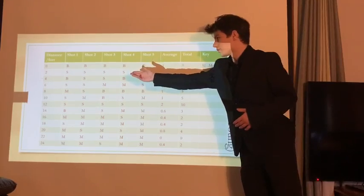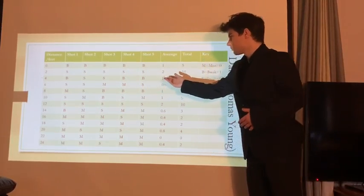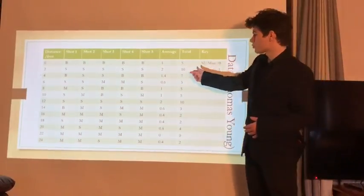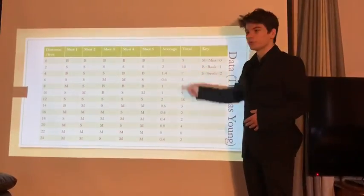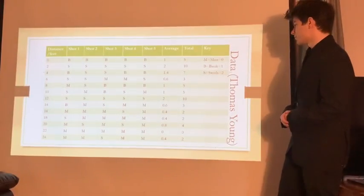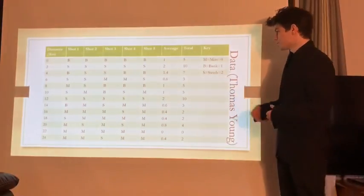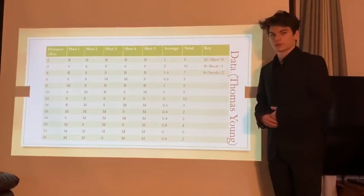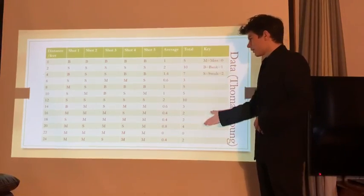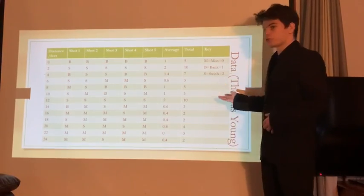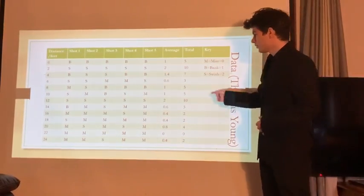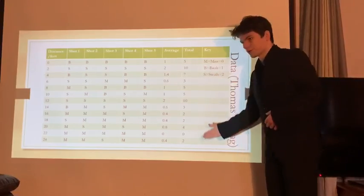And as you can see for distance two, those are all swishes, which the average comes out to a two, because S equals two. And those are the totals — that's why the totals are like that, because B equals one and S equals two.